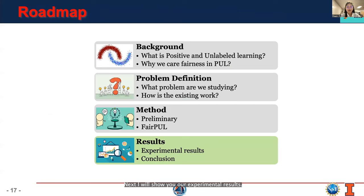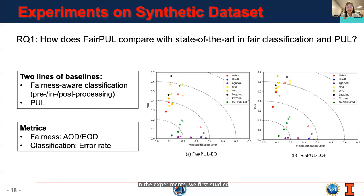Next, I will show you our experimental results. In the experiments, we first studied how does fair PUL compare with state-of-the-art in fair classification and PUL. On the synthetic dataset of binary classification, we compare our method with two lines of baselines: fairness-aware classification including pre-processing, in-processing and post-processing methods and PUL baselines. For metrics, we use Δ_EO and Δ_EOP to evaluate fairness level and error rate for classification performance.